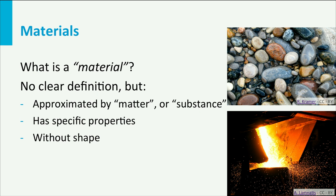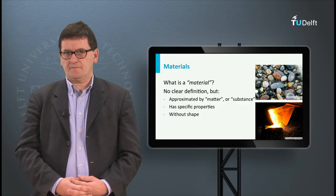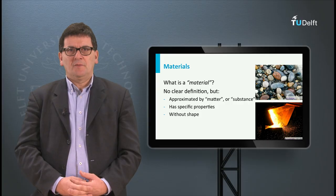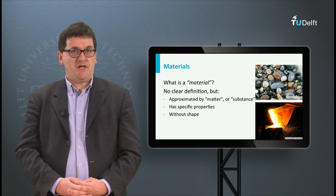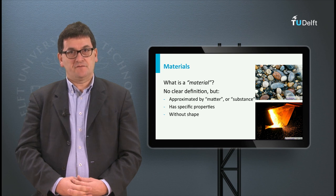For example, a material has density, it has strength, it has electrical resistance. We can determine such properties by taking samples. But in the end, material properties are independent of the shape and size of the sample we analyze.